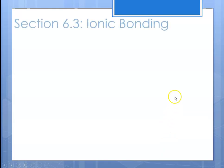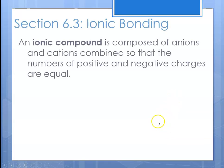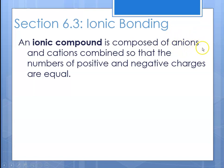This is ionic bonding. An ionic compound is defined as something composed of anions and cations combined so that the number of positive and negative charges are equal. Anions are negative ions — recall, we learned about that in the electron chapter. If you gained electrons, you have a negative charge and you're called an anion. If you've lost electrons, you have a positive charge and you are called a cation.